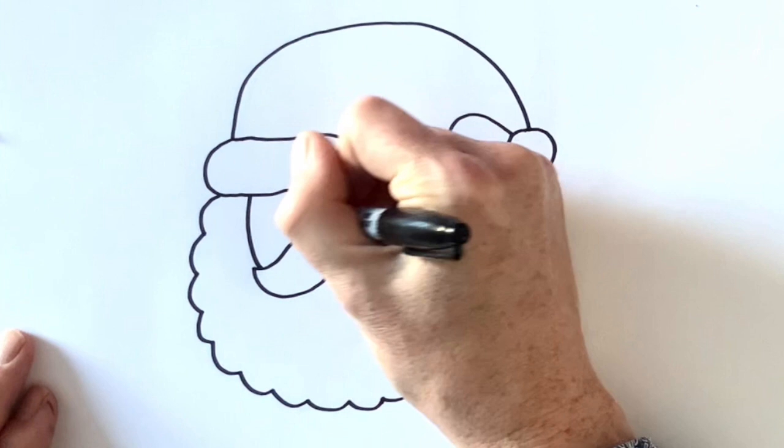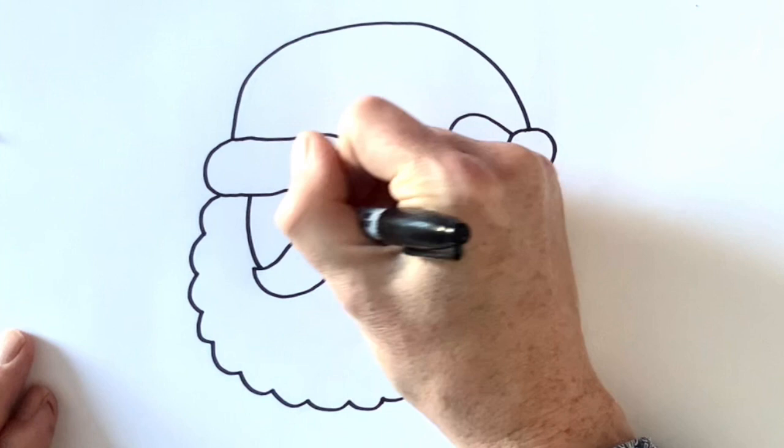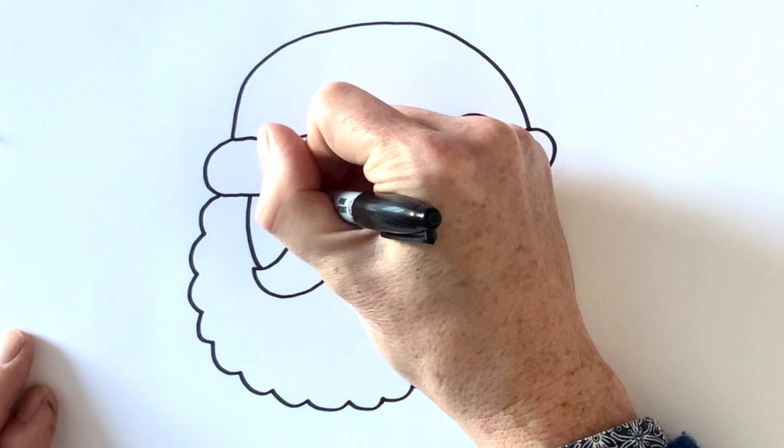I'm going to add two eyes. I like to draw dots for eyes. You can draw eyes however you like. And then I'm going to add some nice thick eyebrows.